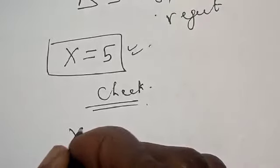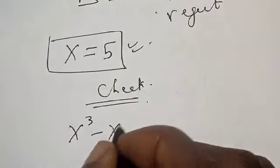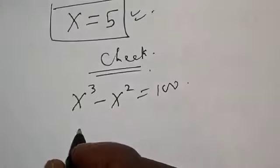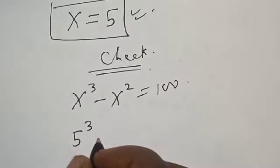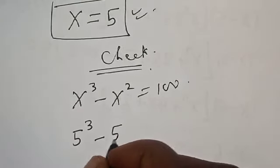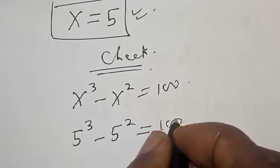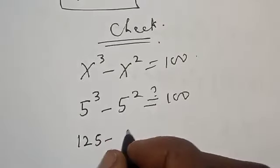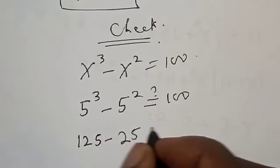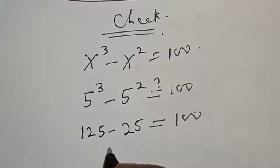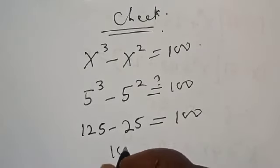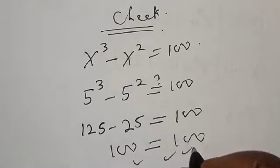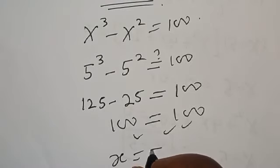We have the given equation: x raised to the power 3 minus x squared equals 100. At x equals 5, we have 5 raised to the power 3 minus 5 squared, which must equal 100. That is 125 minus 25, which equals 100. The left-hand side equals 100, so we satisfy the given equation at x equals 5.